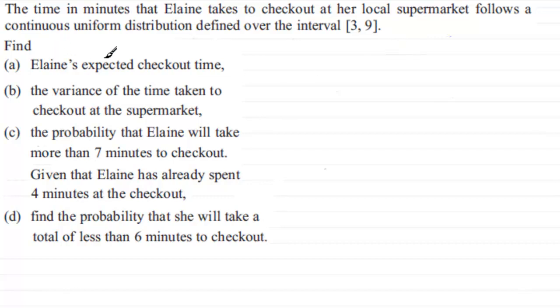And in the first part, we've got to find Elaine's expected checkout time. Now, before I start to do anything like this, what I would encourage you to do is to define your random variable. Quite often, you'll get questions that have a capital letter which defines the random variable, like X, for instance. But in this question, there is no capital letter defining that random variable, so we've got to introduce it. So, let capital X be the random variable, RV for short. And in this particular example, it's going to be the time spent in minutes at the checkout.